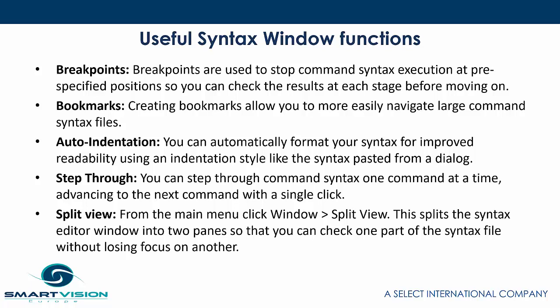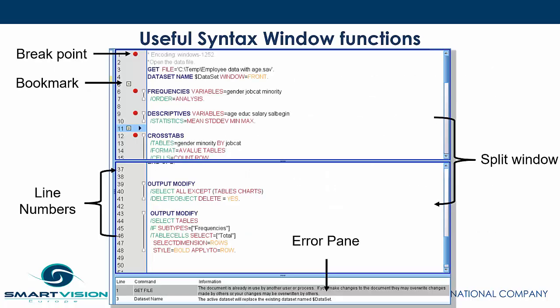Finally, there's a split view procedure where you can go to Windows, split view, and this splits the syntax editor into two panes so you can check one part of the syntax file without losing focus on another. Here's an illustration — you can see breakpoints have been inserted by right-clicking and inserting a breakpoint. Here are some bookmarks which you can add text to. You'll see an error pane at the bottom, line numbers, and you can also ask it to split the window.